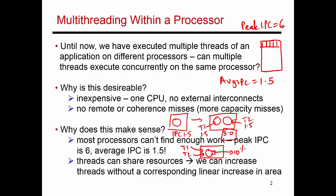What happens in practice is that each thread is not able to sustain an IPC of 1.5, because of contention for various resources. The ALUs are not the major contention point, but if the two threads are sharing the same cache or the same branch predictor, you see a lot more contention. You effectively receive only half the cache capacity or half the branch predictor capacity, and that leads to a significant drop in IPC. If things go well, maybe each thread runs at an IPC of 1.0, giving an aggregate throughput of 2.0 — a 33% increase from 1.5 for only a 10% area overhead. So that's the main reason simultaneous multithreading was introduced.